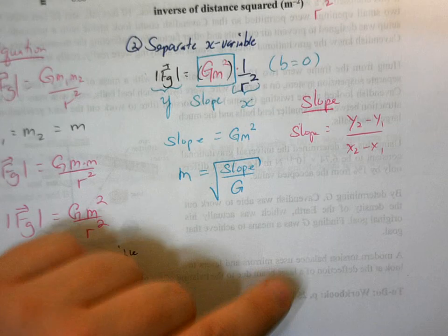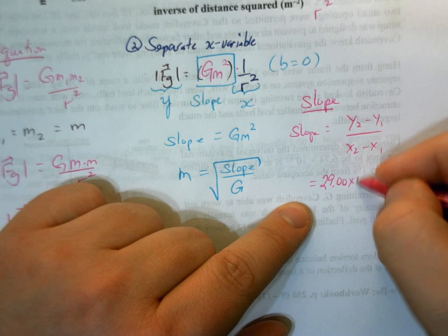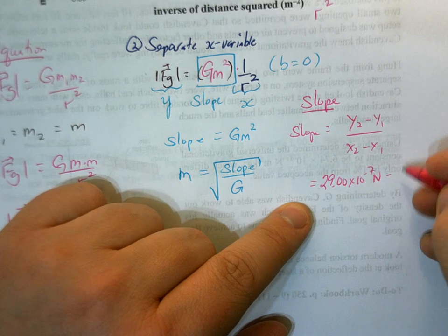So my slope is going to be that y2 minus y1 over x2 minus x1. So on your y's, don't forget that you have that 10 to the minus 7 because like I said, if you forget that, you're going to get an answer that doesn't make a lot of sense.